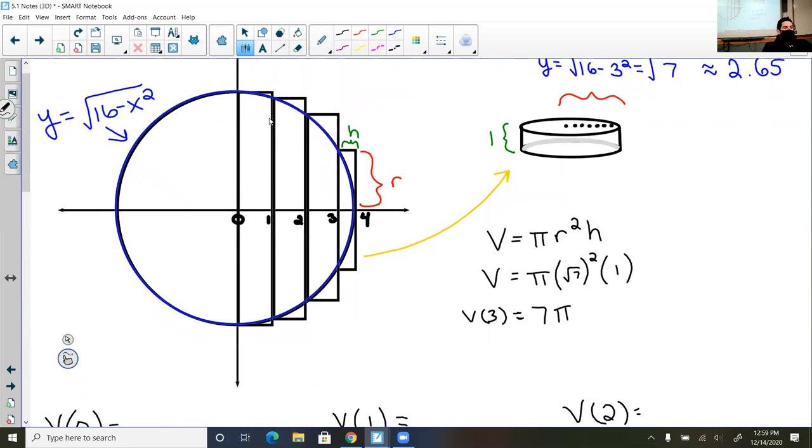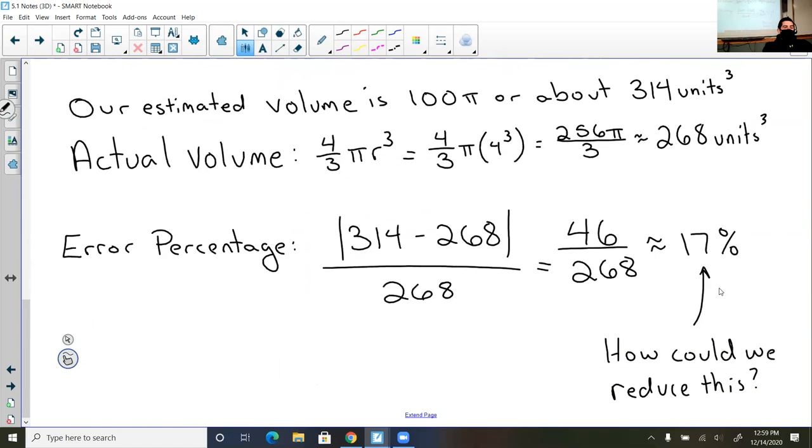The other way I could have done it is I could have done the right, which that would have undercut it. My guess is it probably would have undercut it as much as we overcut it. So then we probably would have had the same amount of error of about 17%. So your homework tonight is going to be three problems. They all involve either using three-dimensional shapes or the concept of it being under a curve. It's not as nice as the problems were yesterday. They will just be a little bit more complicated.